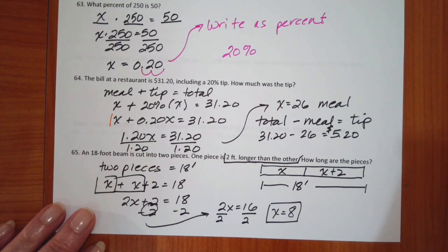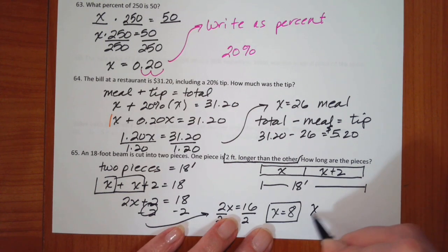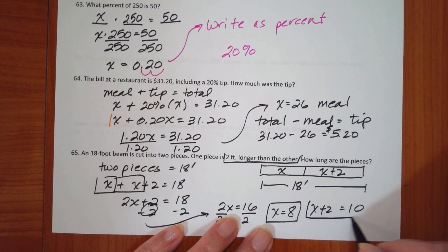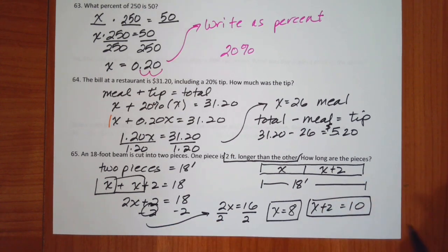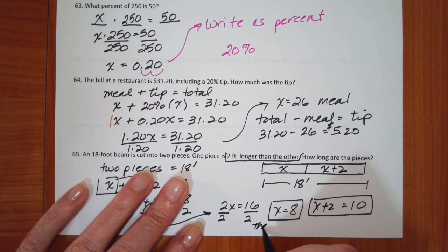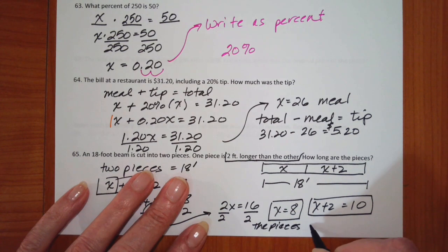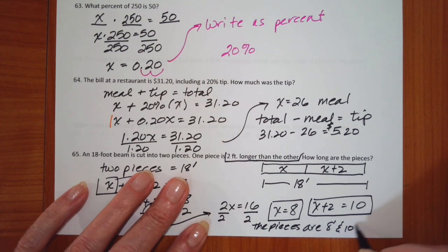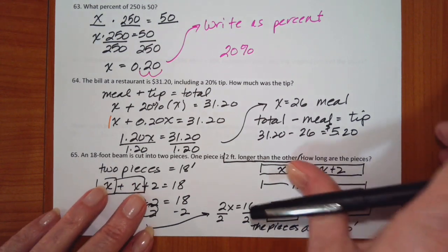So if x is 8, then x plus 2 is 10. 8 plus 2 is 10. So the two pieces are 8 feet and 10 feet.